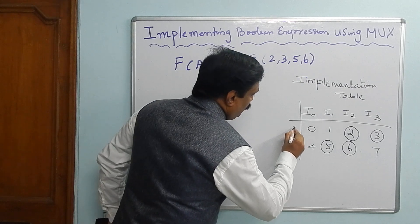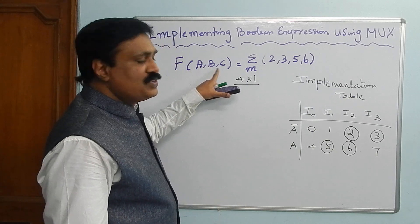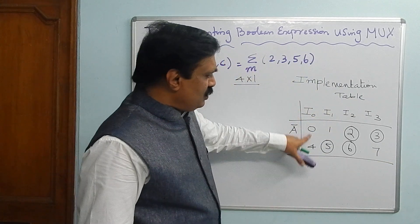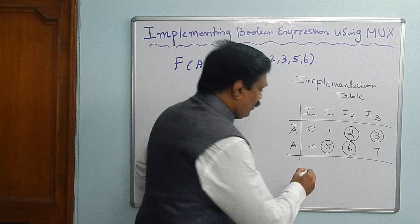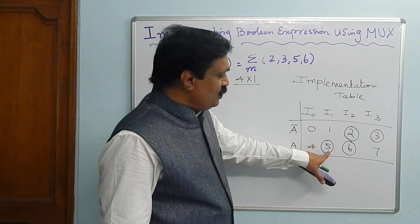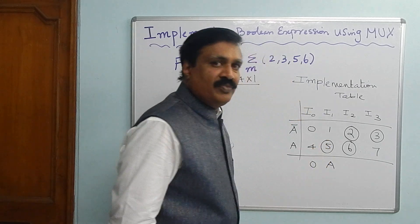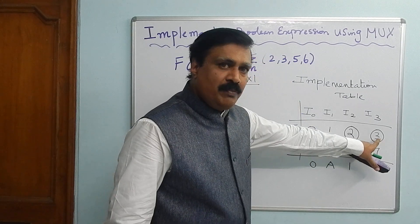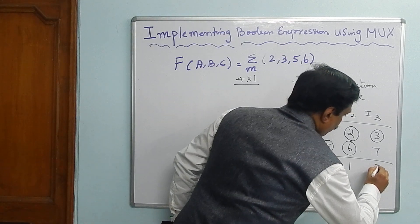I take the first variable A as the input variable, and B and C as the select lines. Now, see the first column — no number is circled, therefore you mark 0. In the second column, number 5 is circled — it belongs to variable A, therefore you write A. If both numbers are circled in a column, you mark 1. Here 3 belongs to A complement, therefore you write A complement.